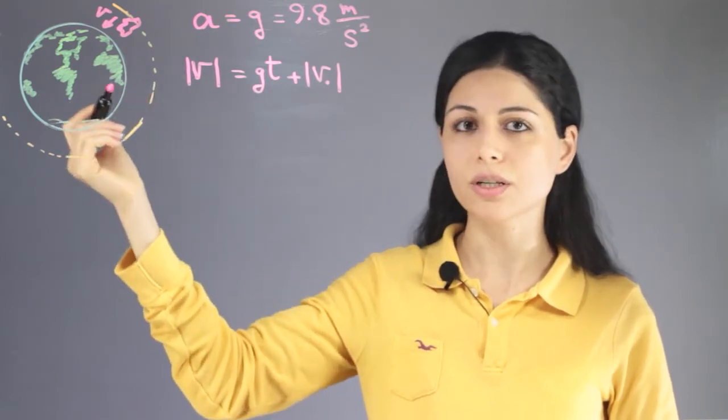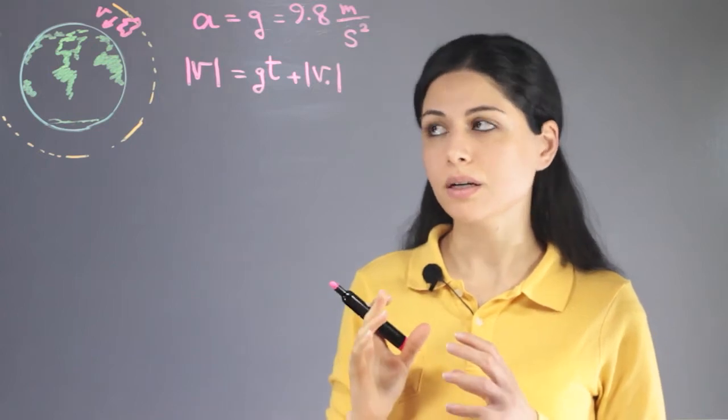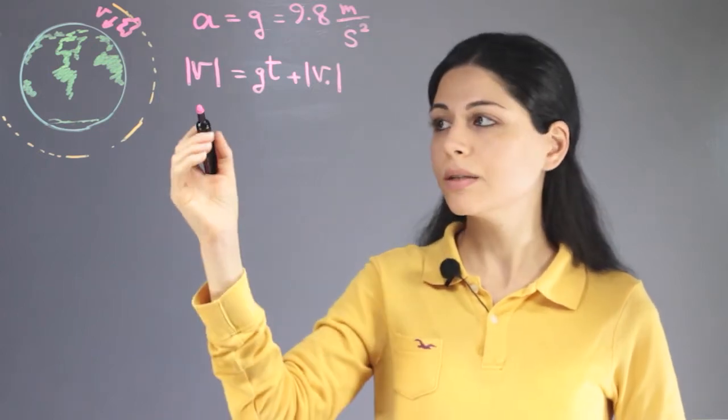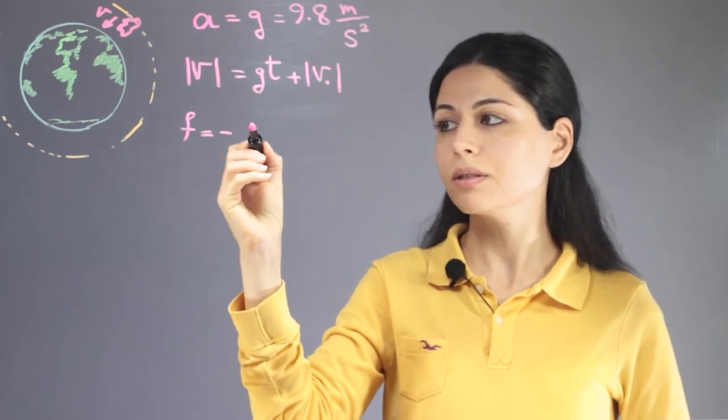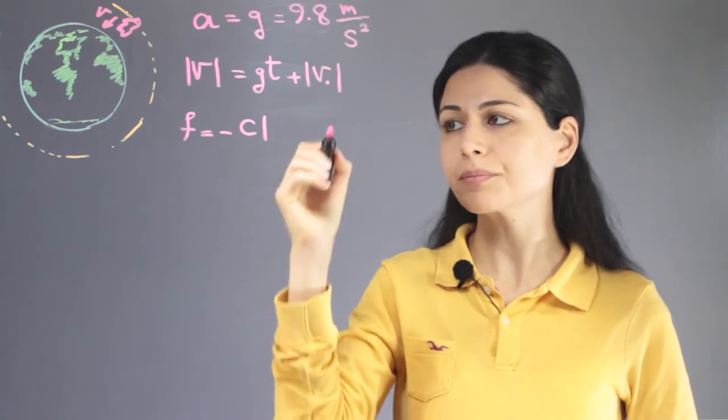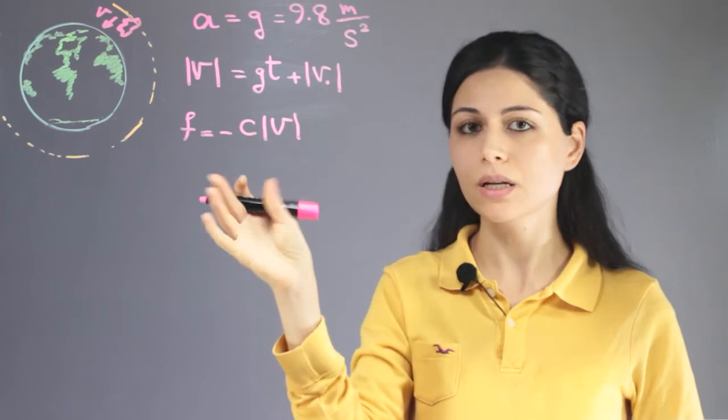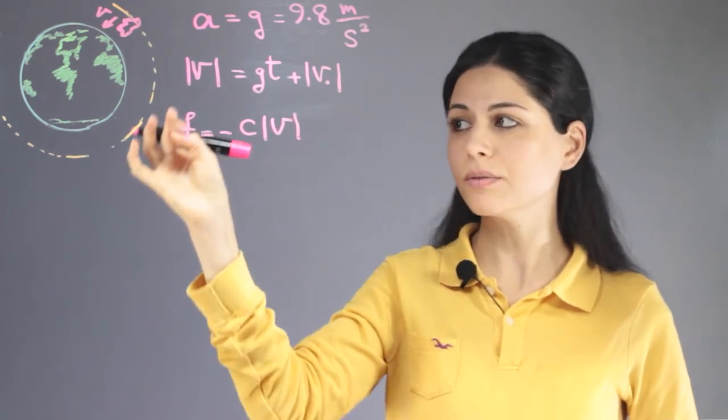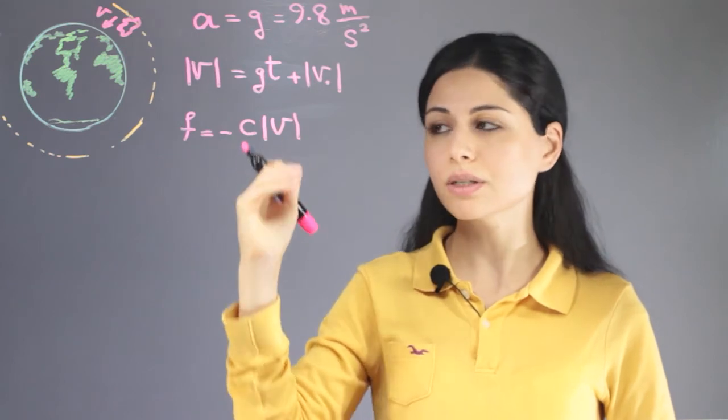We also have friction in the atmosphere between the asteroid and the air. The friction force is equal to negative c times the magnitude of the velocity, where c is a constant and the velocity magnitude increases with time.